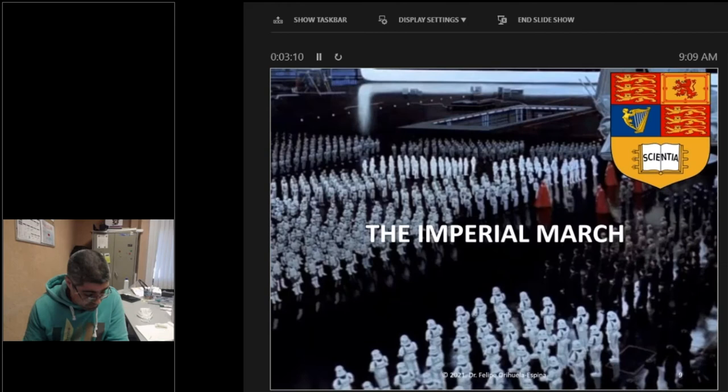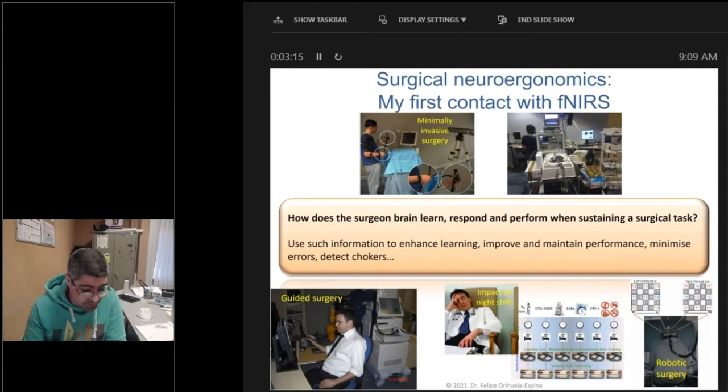So without further ado, let's get into business. Once upon a time, I arrived as a postdoc to Imperial College to the group of Profs Ara Darzi and Daniel Yang. There I met Daniel Leff, who gave this same seminar a couple of months ago. Daniel Leff is a surgeon and he is interested in understanding how the surgeon's brain learns in different surgical scenarios and across different surgical modalities, for which fNIRS provided an excellent neuroimaging option. Helping Dan with his data analysis was my first ever contact with fNIRS.